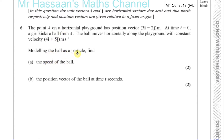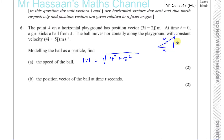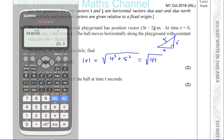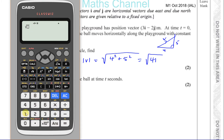Modelling the ball as a particle, find the speed of the ball. The speed of the ball is basically the magnitude of its velocity. The magnitude of the velocity is given by the square root of 4 squared plus 5 squared, because it's going 4i plus 5j — so you're using Pythagoras' theorem. That gives the square root of 16 plus 25, which is the square root of 41.